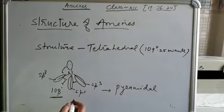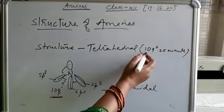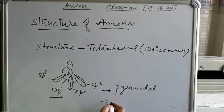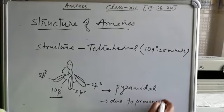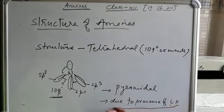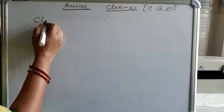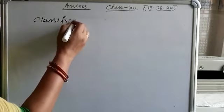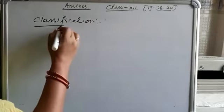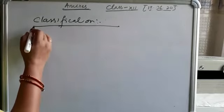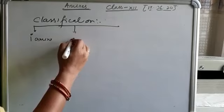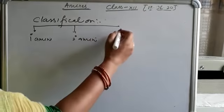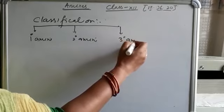The bond length is also lesser than the actual bond length of tetrahedral, due to the presence of the lone pair. Thus we studied the classification of amines. Amines — either alkyl or aryl — are classified into first-degree, second-degree, and third-degree amines.